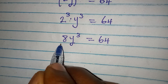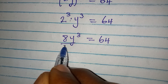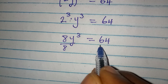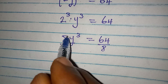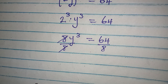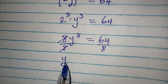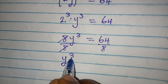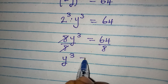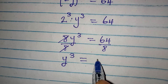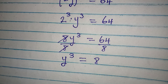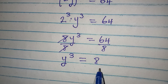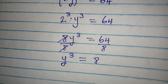The next step is to divide both sides by 8. Dividing gives us y³ = 8, because 64 divided by 8 equals 8.